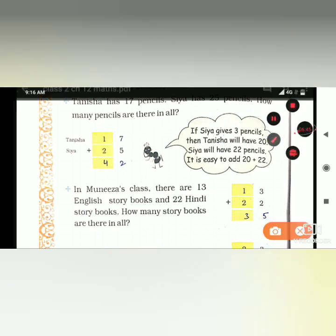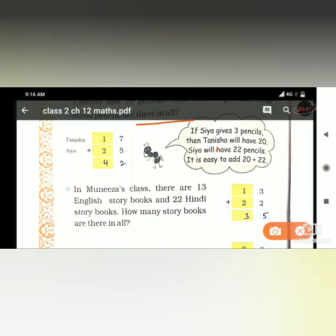How many pencils are there in all? 17 plus 25. 7 plus 5 is 12, so write 2 here and carry 1. So 2 plus 1 plus 1 is 4. Answer is 42.